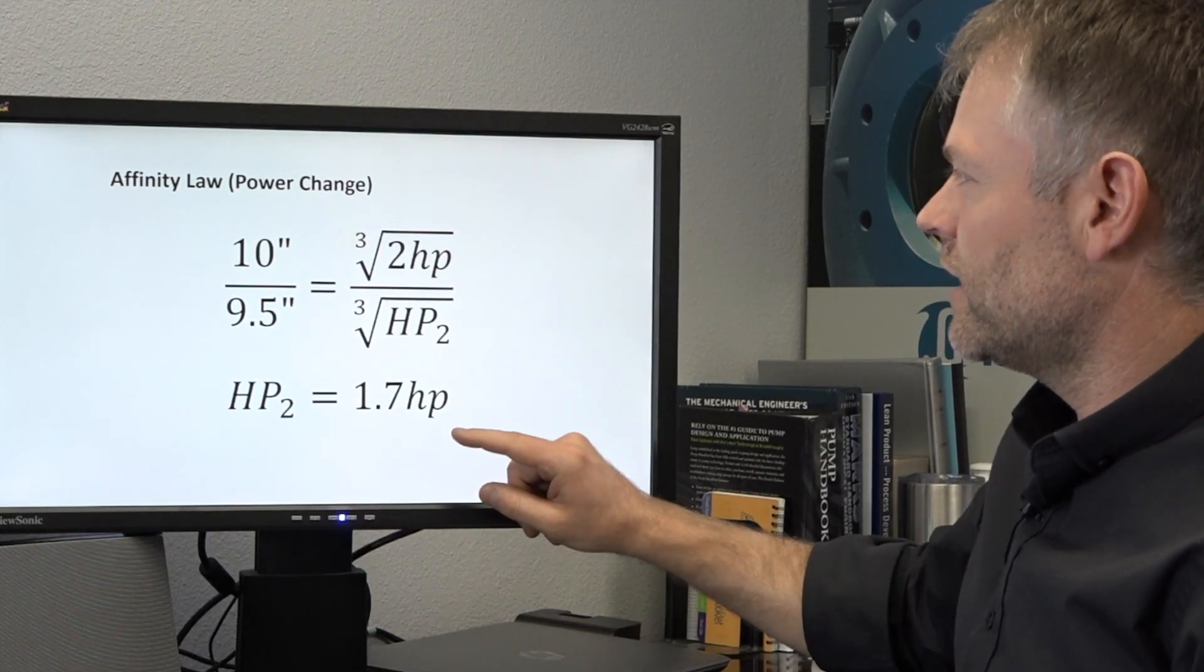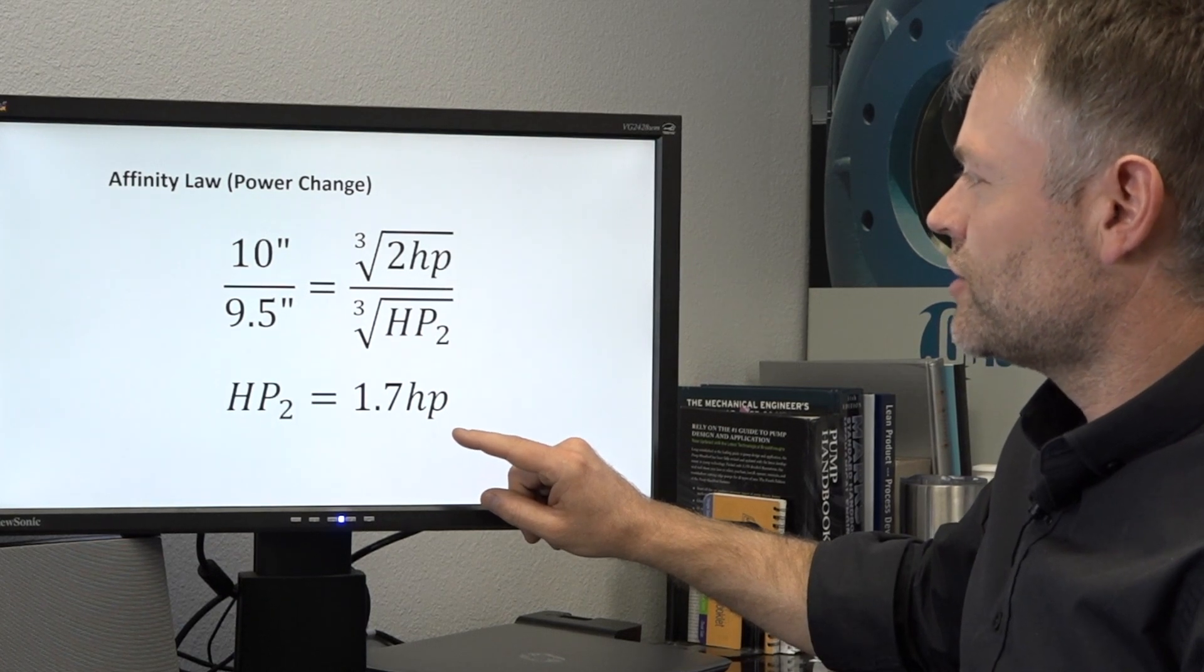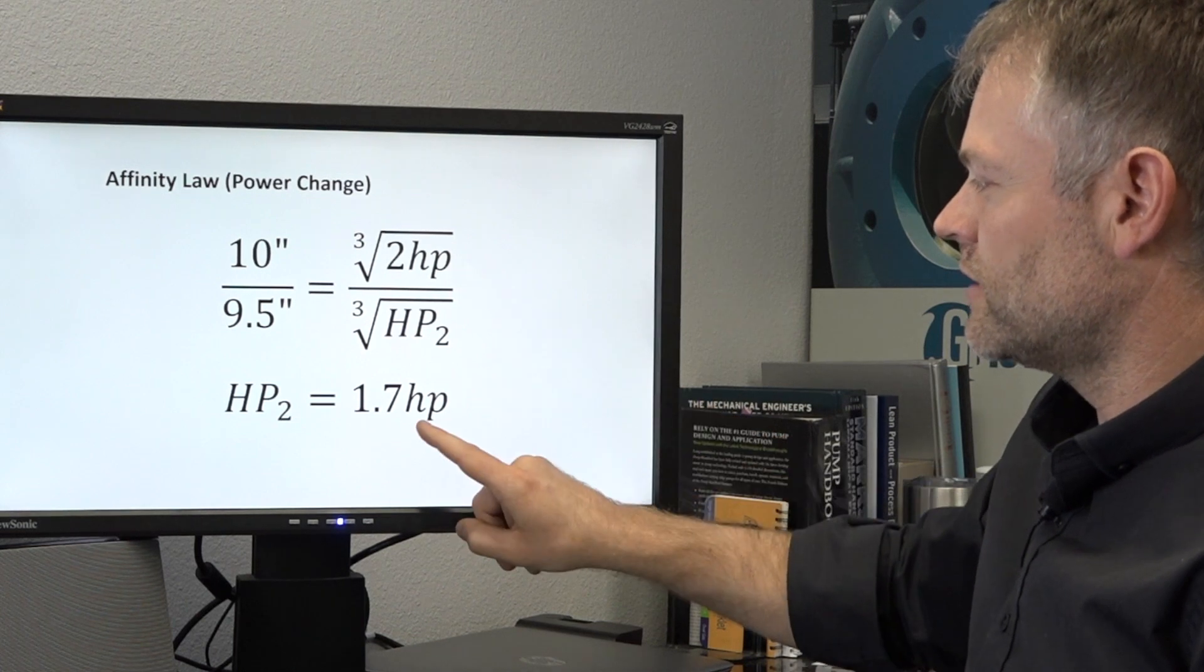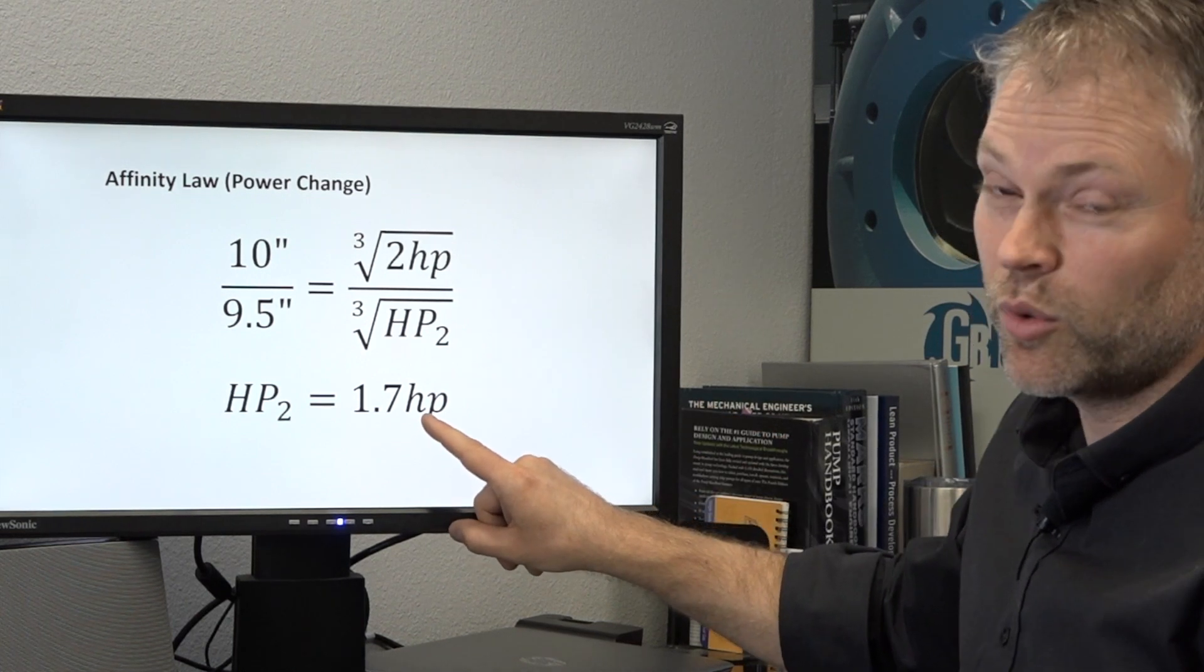Finally, we can calculate our power change and in this case the pump started with two horsepower and now it is going to be requiring 1.7.